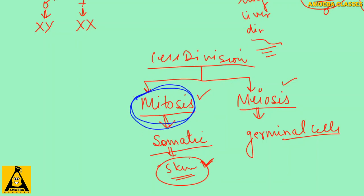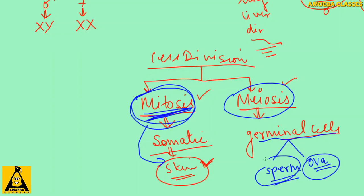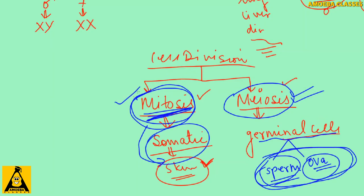In the body, wherever there is wear and tear of any cell, mitosis occurs to repair that part. Meiosis, on the other hand, takes place exclusively in the germinal cells — sperm and ova. These gametes carry genetic information passed from one generation to another. So meiosis is exclusive to sperm and ova, while mitosis occurs in somatic cells.